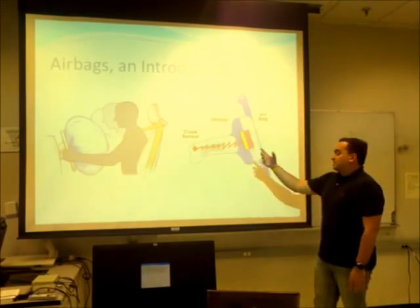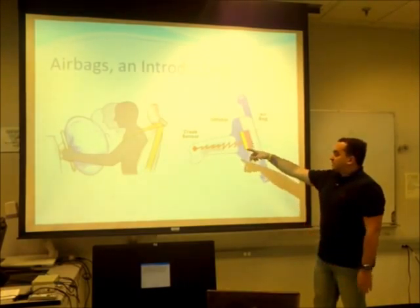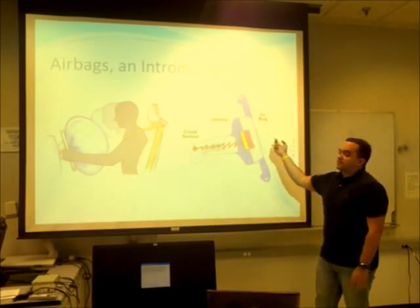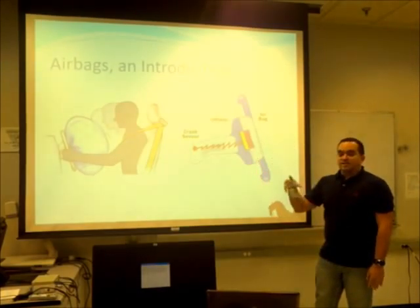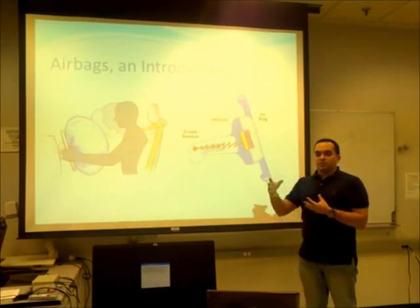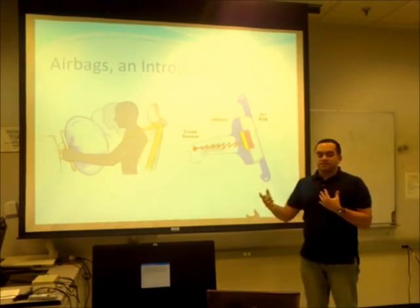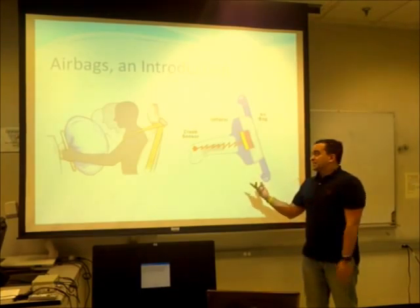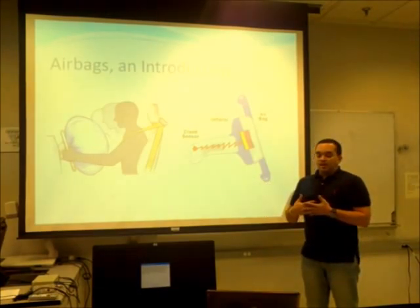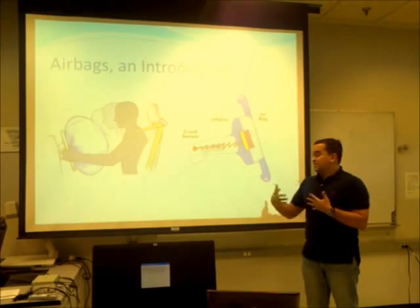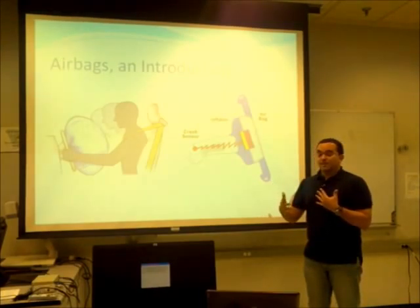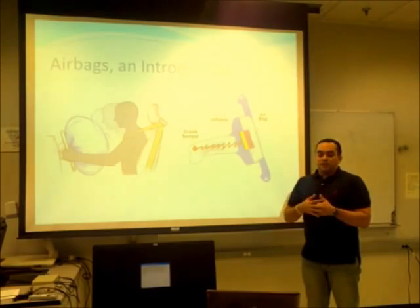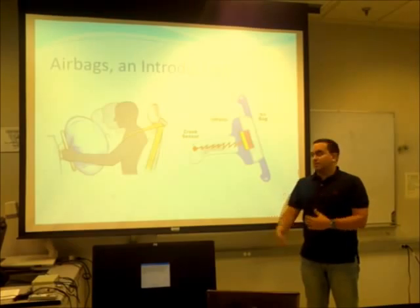This system is basically composed by a crash sensor, a module, and an airbag of course. Through the years, this system has helped to reduce the risk of death and injury by 30% or less. In the following slides, we're going to explain how this system works as a mechanism, the different types, and the improvements that we recommend, because everything can be designed better.